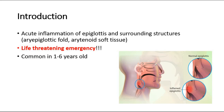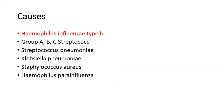This picture shows the normal epiglottis versus an inflamed epiglottis seen in acute epiglottitis. These are the few causative organisms that can cause this condition. The most commonly seen organism is Haemophilus influenzae type B. Others include group A, B, C Streptococci, Streptococcus pneumoniae, Klebsiella pneumoniae, Staphylococcus aureus, and also Haemophilus parainfluenzae.